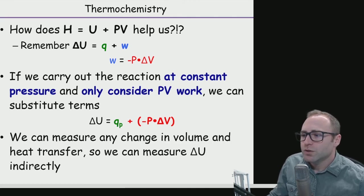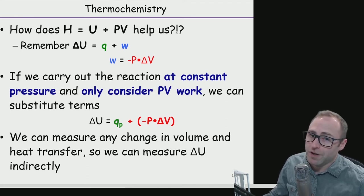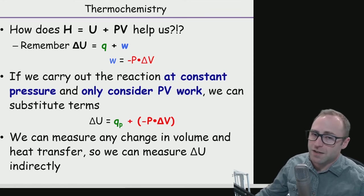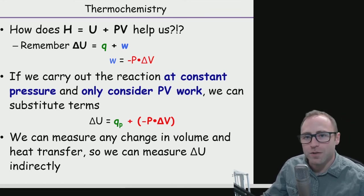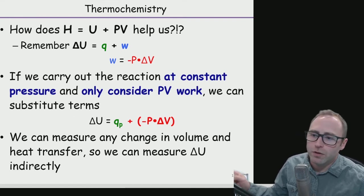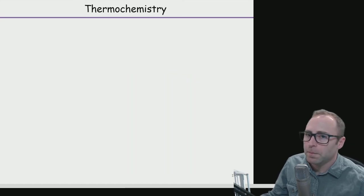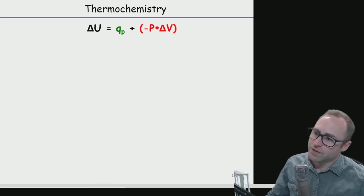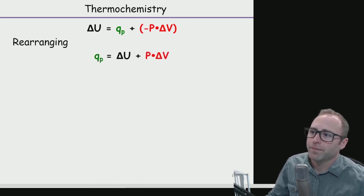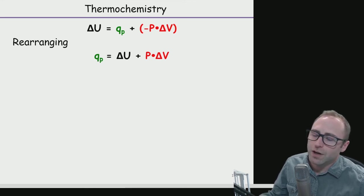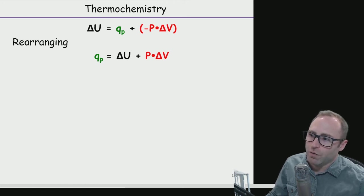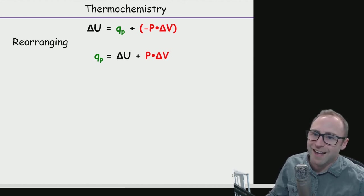If we only consider PV work for a constant pressure reaction, we can do some mathematical substitutions. We get delta U equals Q_p (the subscript P denoting heat at constant pressure) minus P times delta V. Since volume can change and we can measure heat transfer, we can figure out the change in internal energy indirectly. Then rearranging, Q_p equals delta U plus P times delta V.